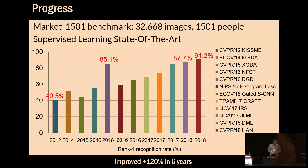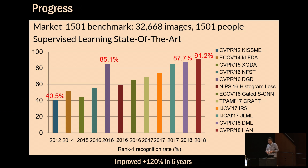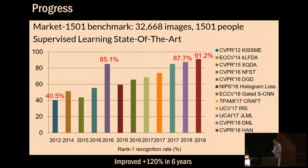Over the last decade, starting from about 2007–2008, the community has made significant progress. There are a number of benchmark datasets, and one of the currently largest is called Market, with over 32,000 images and over 1,500 people. The state-of-the-art has made steady progress over the last six years, and the latest models can reach more than 90% performance. However, this is all based on supervised learning.